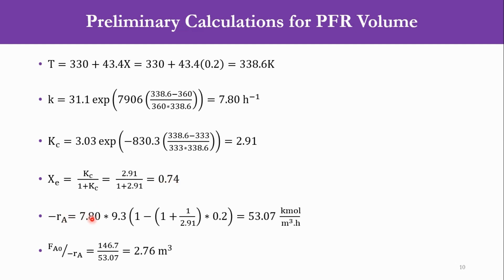Minus rA, we can determine it. It is equal to k into CA0, 1 minus 1 plus 1 over Kc into X. Note that X is 0.2, Kc is 2.91, CA0 is 9.3, it was given in the statement, 7.8 you have calculated here, and accordingly -rA equals 53.07 kmol per cubic meter per hour. And if you want to calculate FA0 over -rA, FA0 is 146.7, -rA is 53.07, and that comes out to be 2.76 cubic meter.